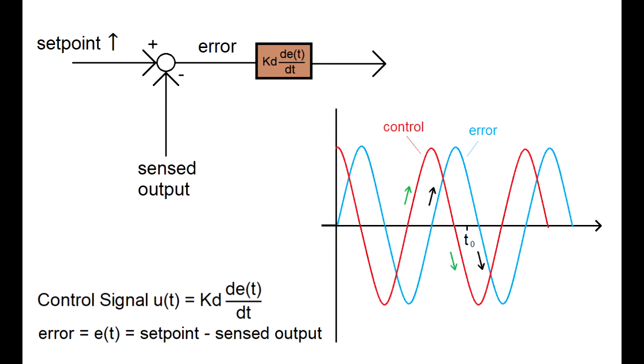So in a way, the derivative control is predicting the future error. And it's in this getting ahead behavior that allows it to reduce the overshoots before they become significant.